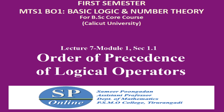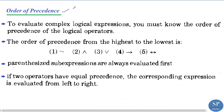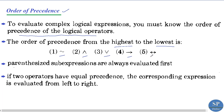In this lecture we are going to discuss the order of precedence of logical operators. When evaluating complex logical expressions that have more than one logical operator or connective, we must know the order of precedence. The order from highest to lowest is: negation, conjunction, disjunction, implication, and if-and-only-if.